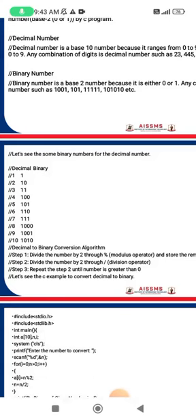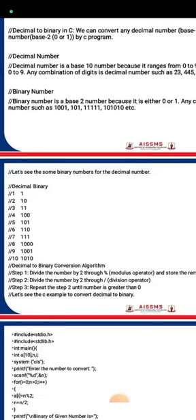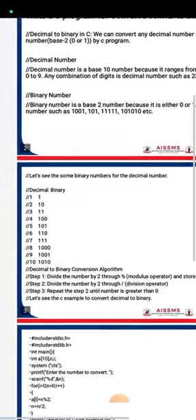This is the stepwise procedure. The algorithm for decimal to binary conversion: first step is divide the number by 2 through the modulus operator and store the remainder in an array. Second step: divide the number by 2 through the division operator.